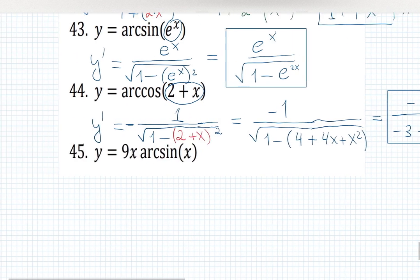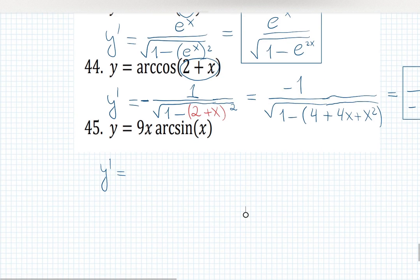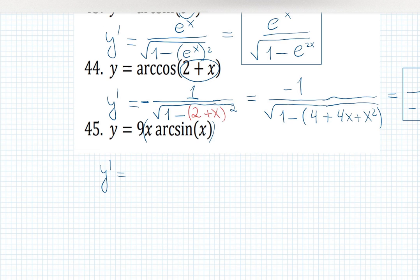We're almost there. Last example. I see some product rule. You can either factor out 9 and see product rule as x times arcsine, or you can see 9x times arcsine x. Both are good. I can see that in the answer they factored out 9. So we can do that as well.